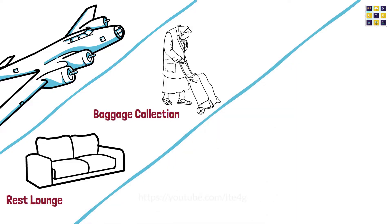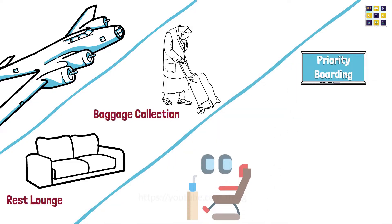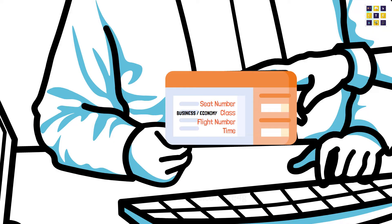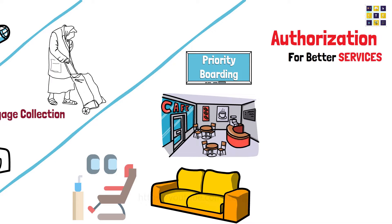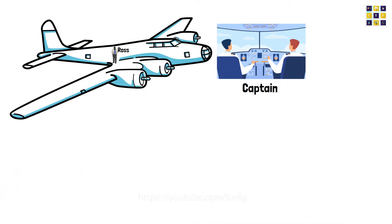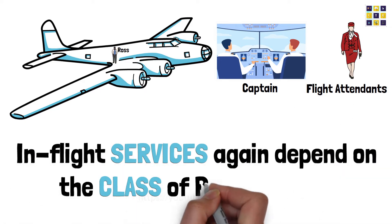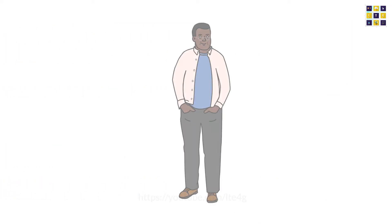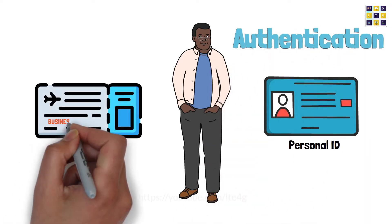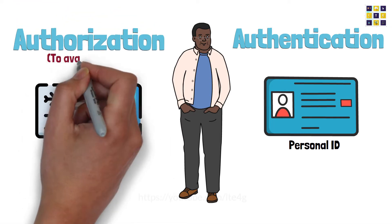There are other services as well such as priority boarding, bigger better seats, fine dining, VIP lounge, etc. Based on whether Ross has a business class or an economy class ticket, the services provided will be different. The authorization to use priority boarding, bigger better seats, fine dining, VIP lounges, etc. depends on the class. Once in the aeroplane, the captain is in charge of everything and has flight attendants who provide services to Ross. The in-flight services again depend on the class of Ross's ticket.